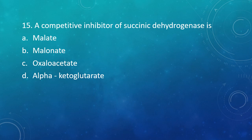Question 15: A competitive inhibitor of succinic dehydrogenase is — Option A: Malate. Option B: Malonate. Option C: Oxaloacetate. Option D: Alpha-ketoglutarate. The correct answer is Option B — Malonate.